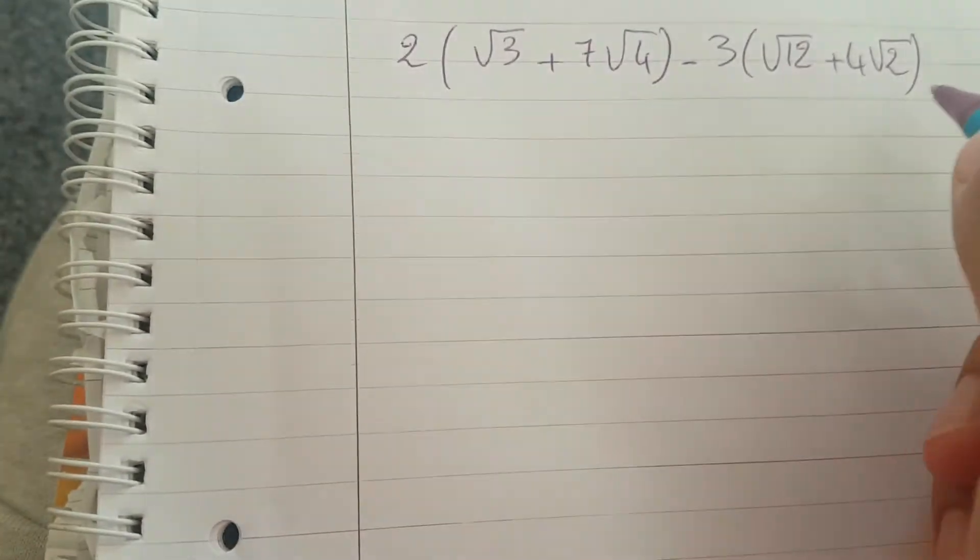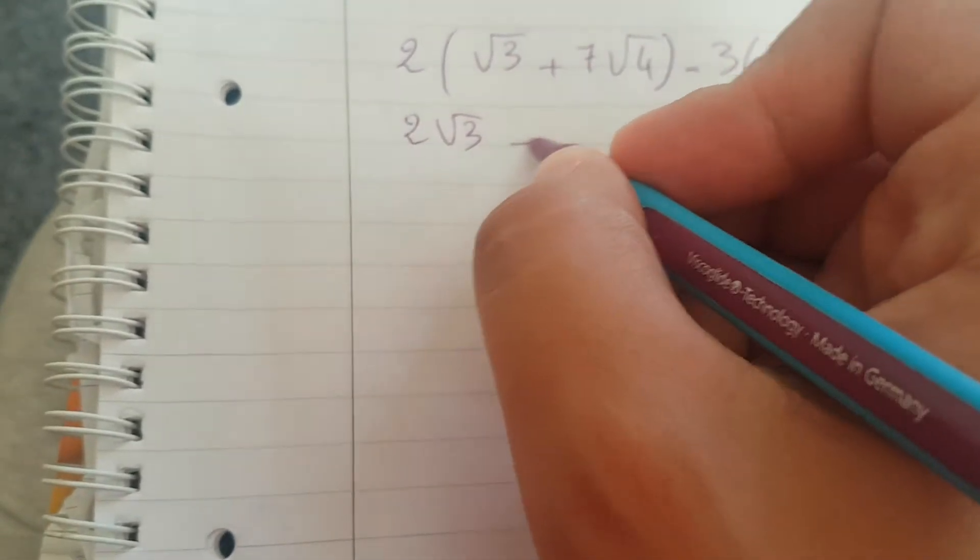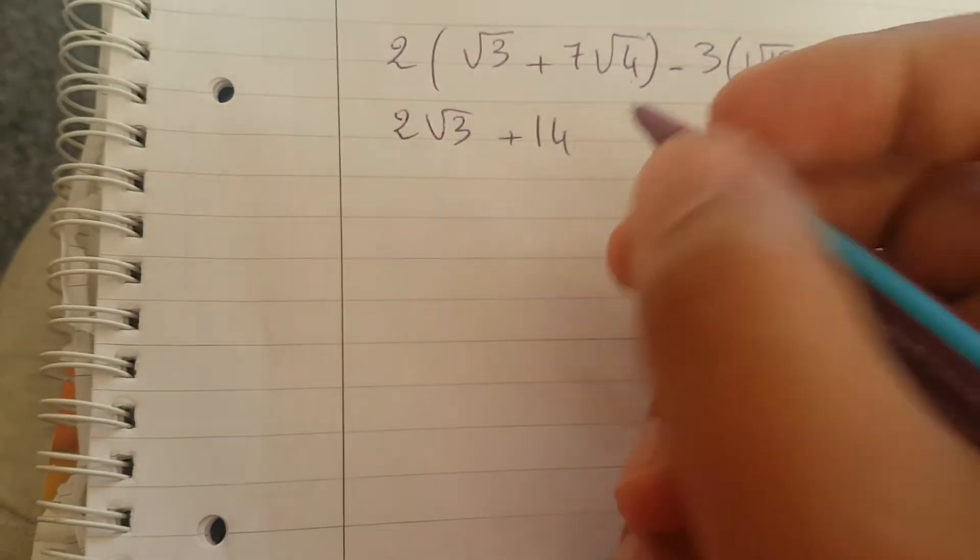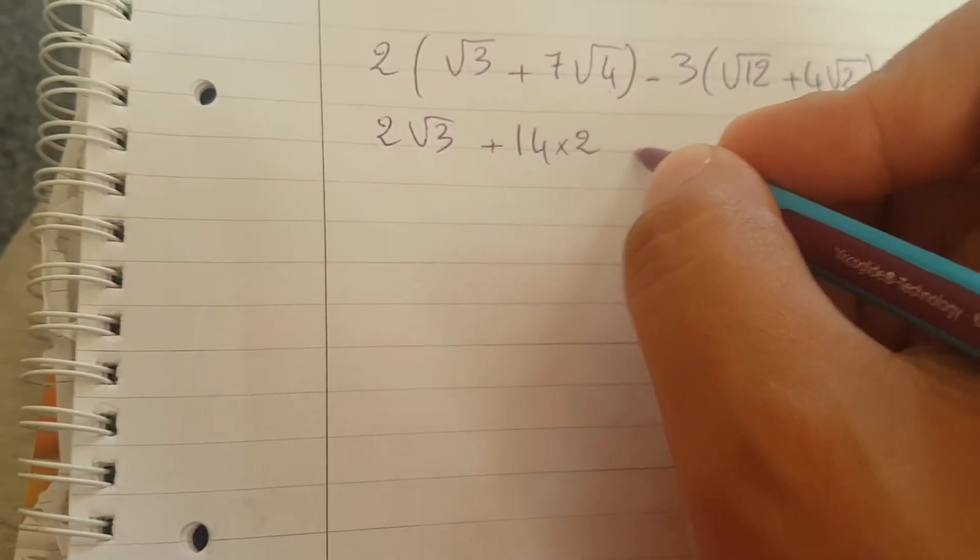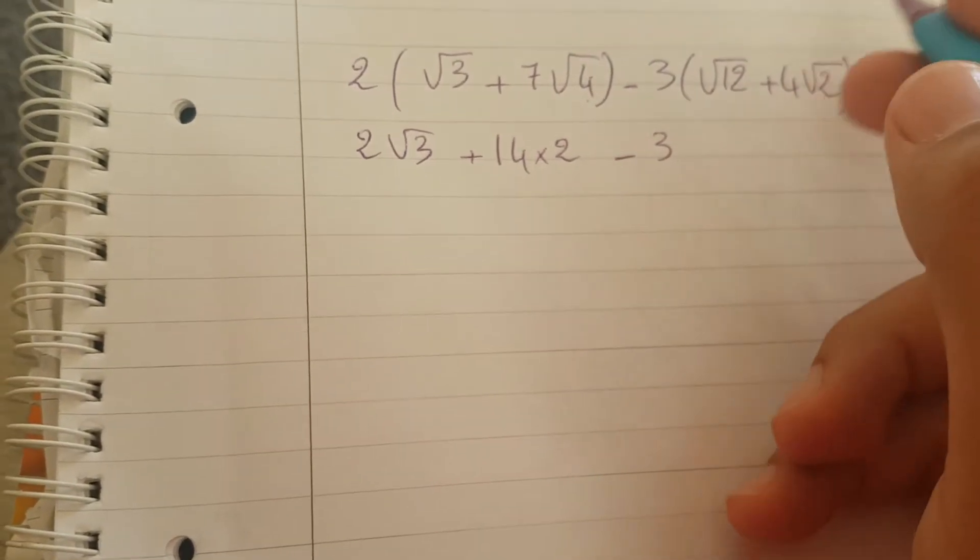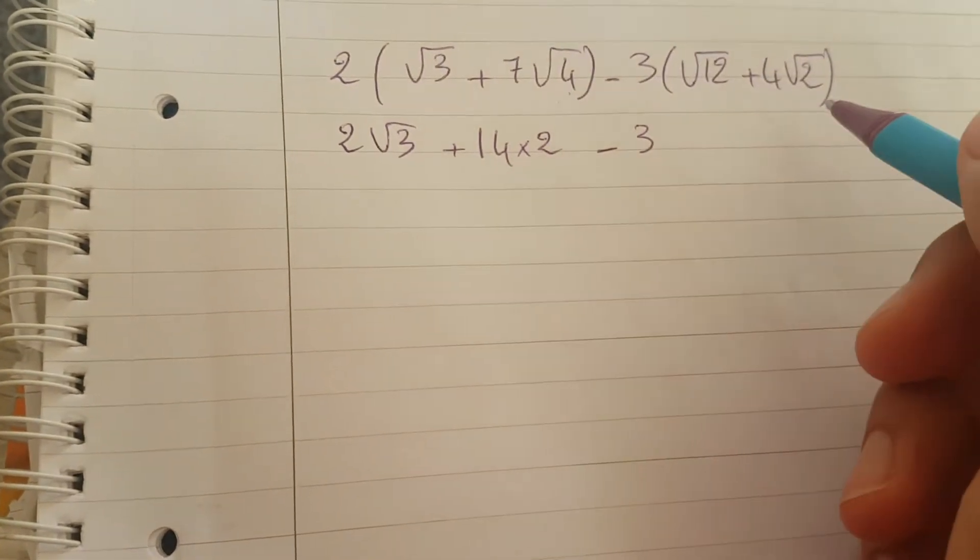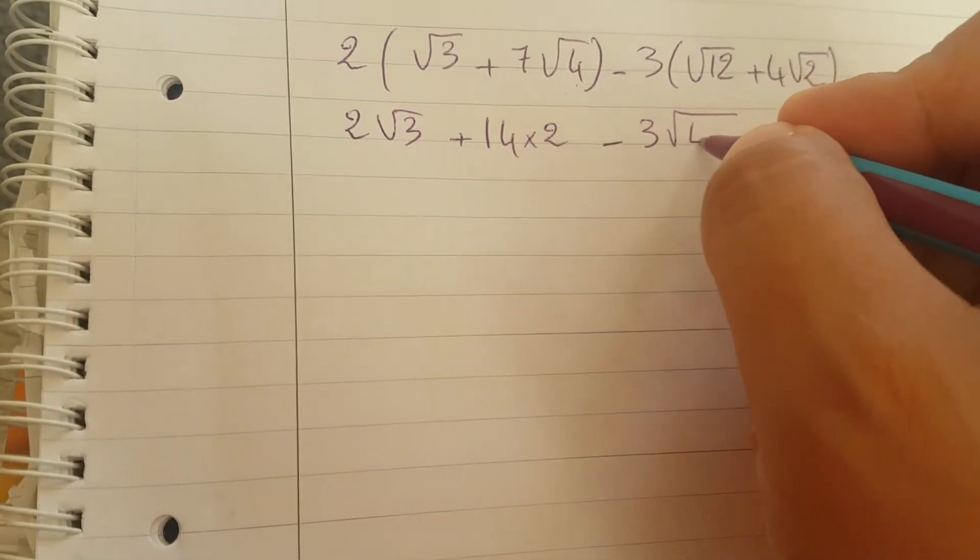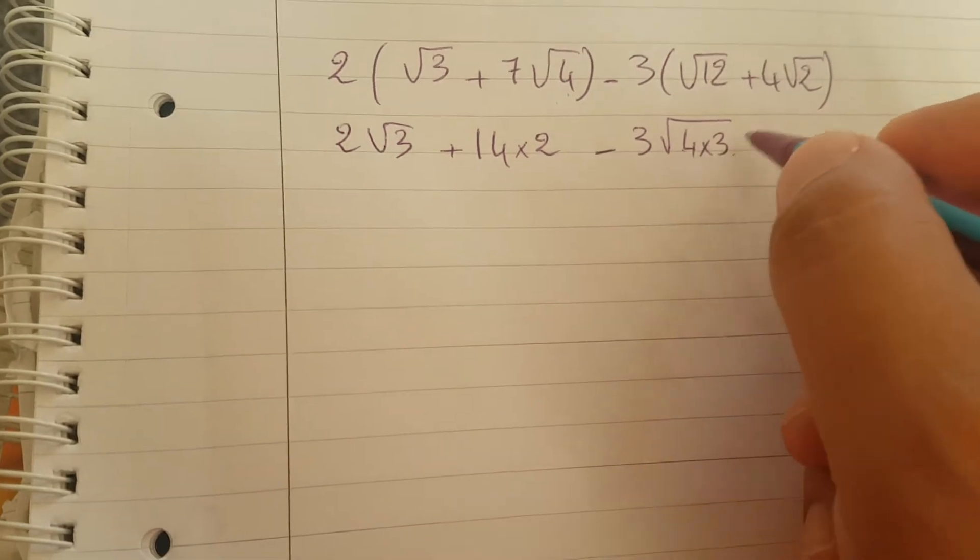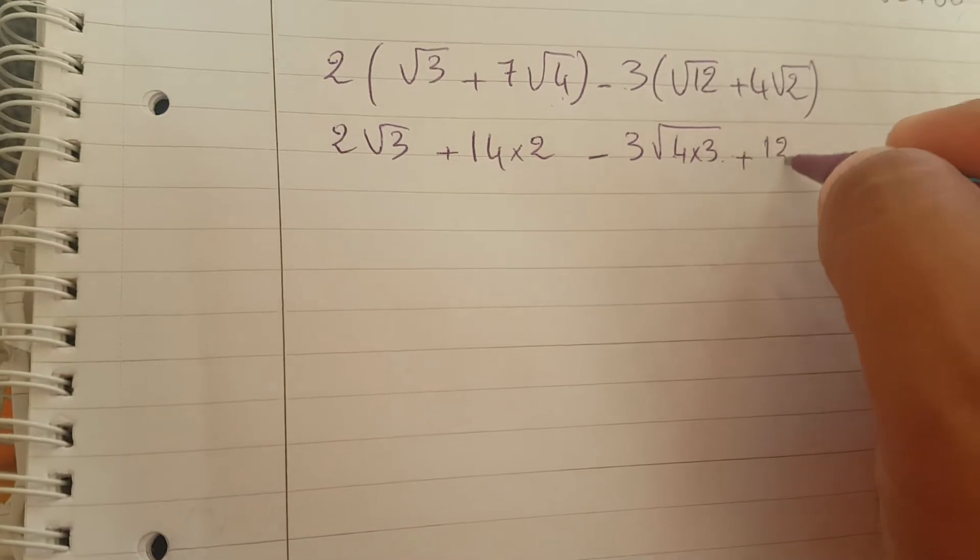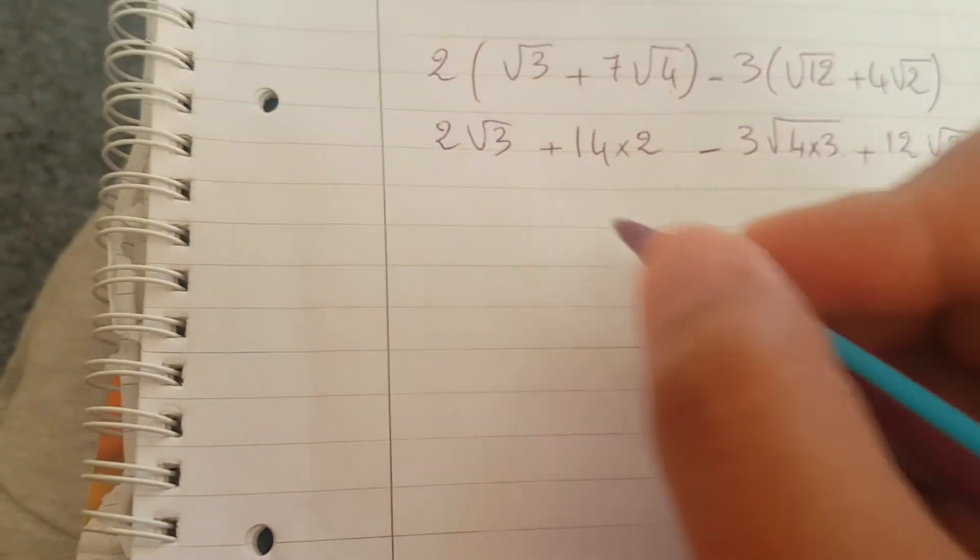Here we would expand first the brackets. So we get two square root of three, two times seven is 14, square root of four we can tell is two, so times two minus three. We can simplify square root of 12 - it's the same as two square root of three, but for now we split it to square root of four times three, because four times three is the same as 12, plus three times four is 12, twelve square root of two.